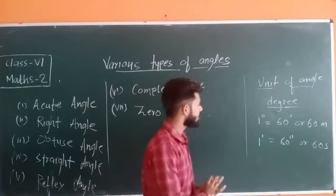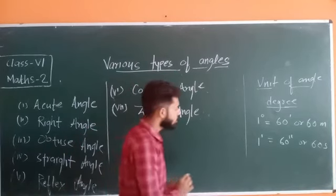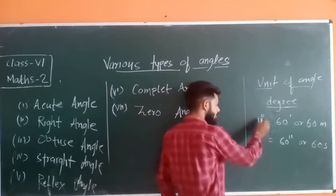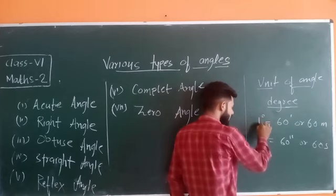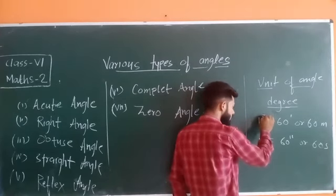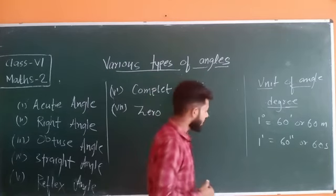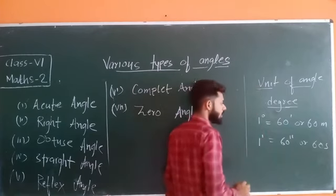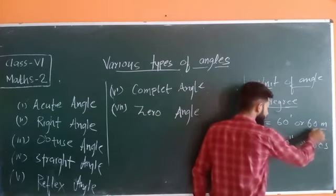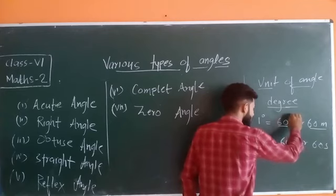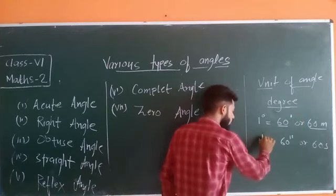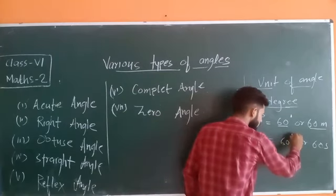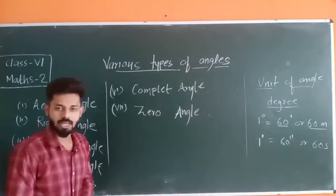Always remember that the unit of angle is degree. Degree is written with a small 'o' at the top of the number, so this is known as one degree (1°). One degree is equal to sixty minutes (1° = 60'), and one minute is equal to sixty seconds (1' = 60''). Remember this relation.